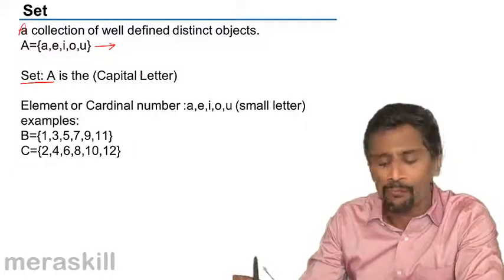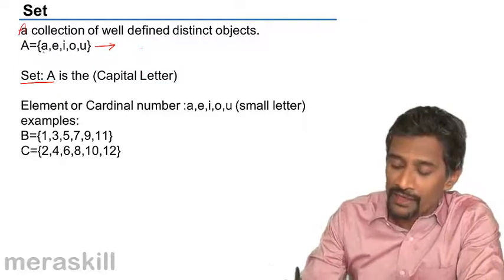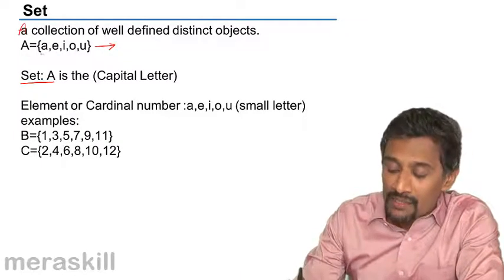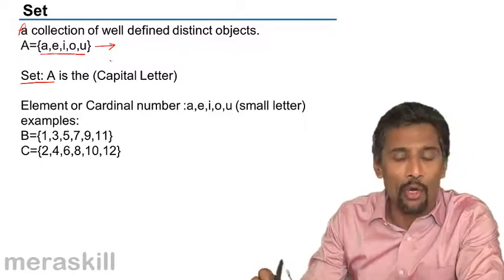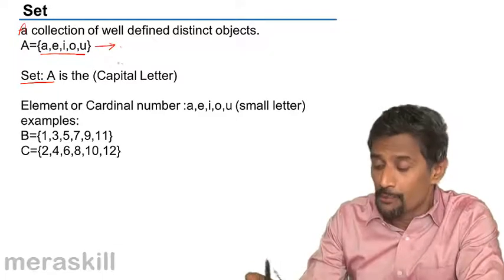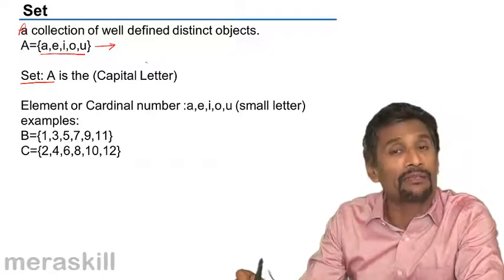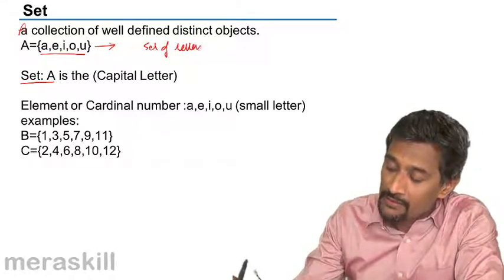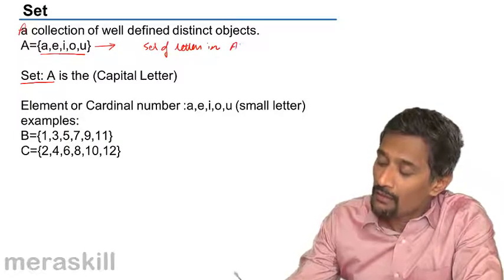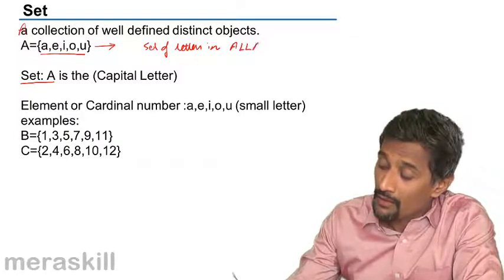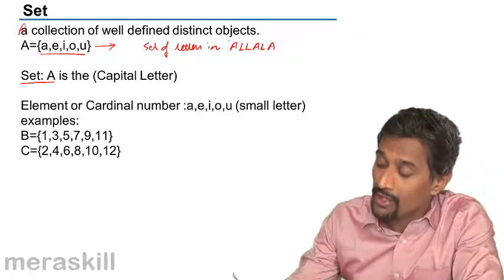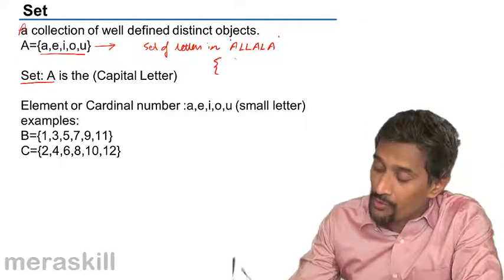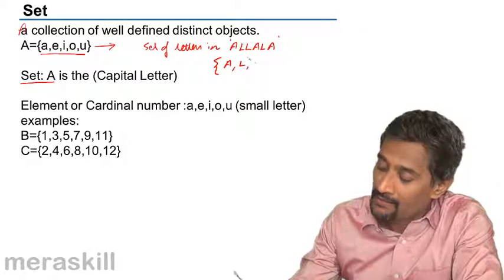In general, if there are letters involved, we always write the letters in smaller casing, just to avoid confusion. But suppose you have a situation where, for example, set of letters in LALA - suppose now here the word itself is in capital letters - so we write it as A, L, that's it.